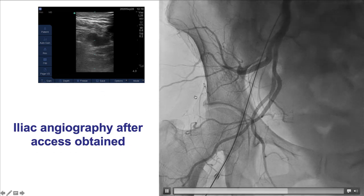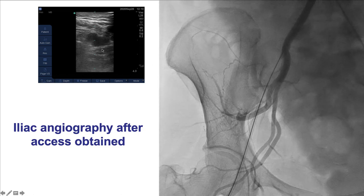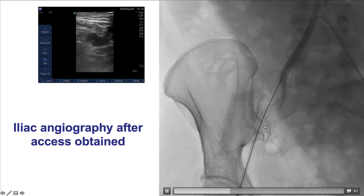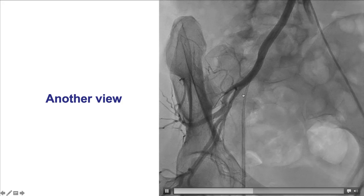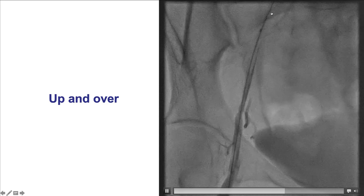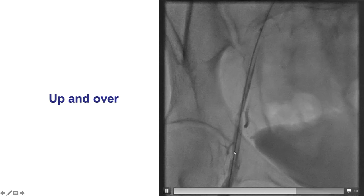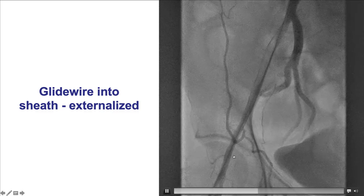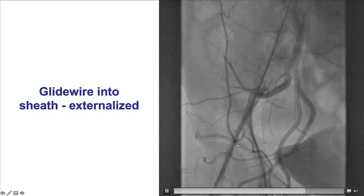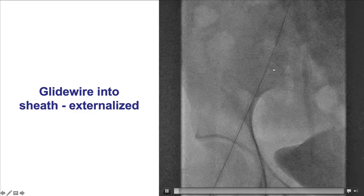This was a patient in whom right common femoral arterial access was obtained using ultrasound guidance. However, the sheath could not be aspirated and there was no arterial waveform. As a result, contralateral access was obtained from the left common femoral artery and an angiogram was performed, demonstrating occlusion of the right external iliac artery, confirmed in another view. Using a microcatheter and a glidewire, the glidewire was advanced through the iliac artery on the right all the way into the common femoral artery. The sheath was pulled slightly back, and then the wire was advanced inside the right common femoral artery sheath and externalized. An injection demonstrated that the problem was in the external iliac artery, likely a dissection.